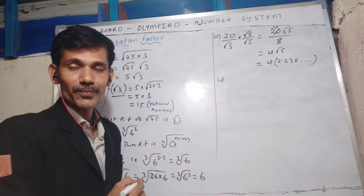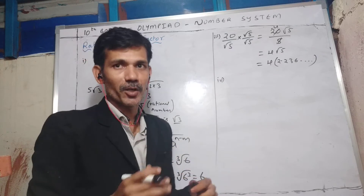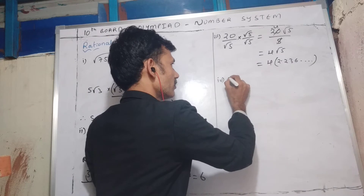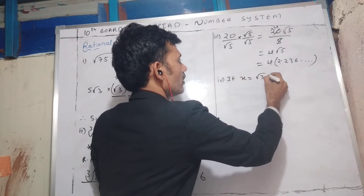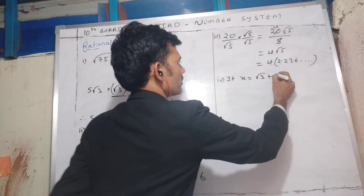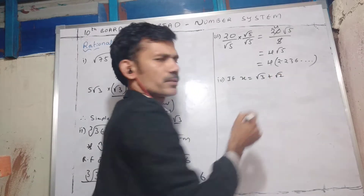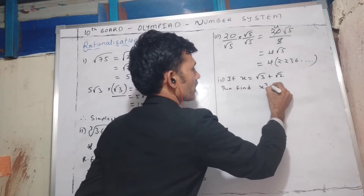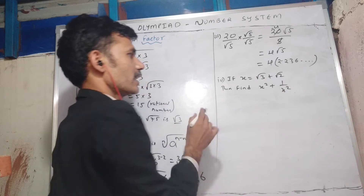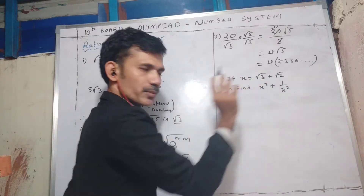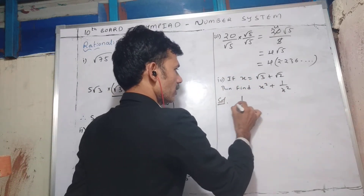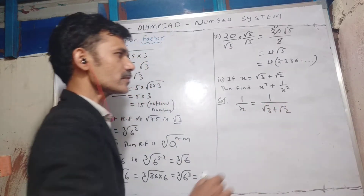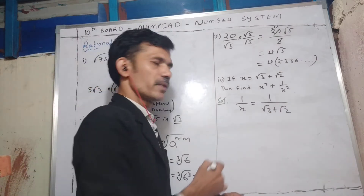Now we will discuss some examples for binomials. Here is a problem from competitive exams: if x = √3 + √2 is given, find x² + 1/x². x is given, but we need to calculate 1/x. So 1/x = 1/(√3 + √2).